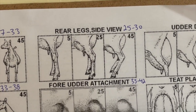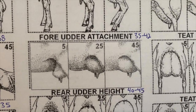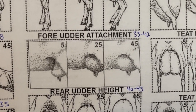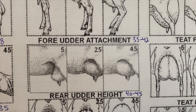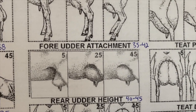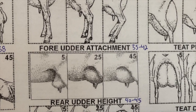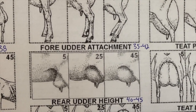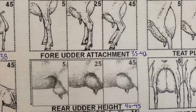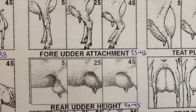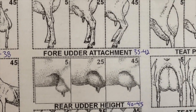For fore udder attachment — the very front of the udder where it attaches to the belly — at a score of 5 there's a big cleft or cup at the front of the udder, which we definitely don't want to see. If you have a first or second freshener, don't panic yet — they can fill that in with time. At 25 the udder is attached up into the belly with no cleft; at 45 there's a very smooth blend up into the stomach. More fore udder is always better as long as it's balanced, so we're looking for a higher score of about 35 to 42.